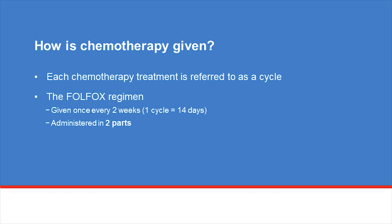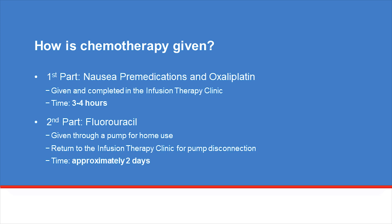The FOLFOX regimen is given once every two weeks. The first part of your treatment will be given and completed at the infusion center. This includes IV medicines to prevent nausea and vomiting and the first chemotherapy medicine, oxaliplatin. This will take approximately three to four hours. Once this is completed, the nurse will attach a pump containing fluorouracil to your central IV line. This pump continuously infuses chemotherapy over approximately two days in the convenience of your home. On the third day, you will return to the infusion center to have the pump disconnected.